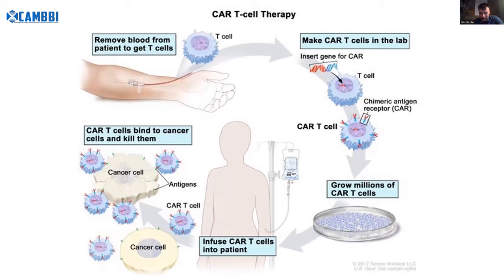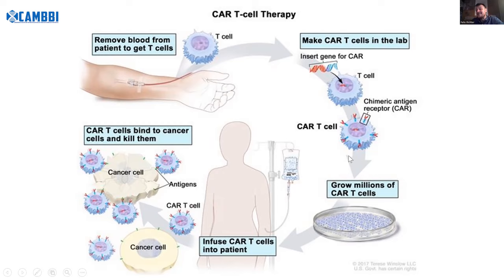CAR-T cells work as follows: you take blood from a patient, harvest their T cells, and insert a gene for a CAR — a chimeric antigen receptor — which helps the T cell detect things it couldn't before, especially cancer cells or T cells attacking the body in autoimmune disease. You expand them in the lab to millions, then re-inject them into the same patient. Since it's the patient's own cells, the immune system won't reject them. Those CAR-T cells can then attack and kill cancer cells — a big step towards curing many cancers not well treatable today.